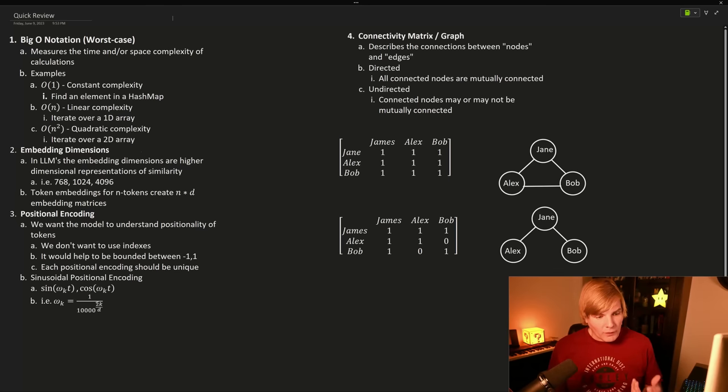Before we can get into what makes increasing context link challenging, we just need to review a few concepts, starting with big O notation.